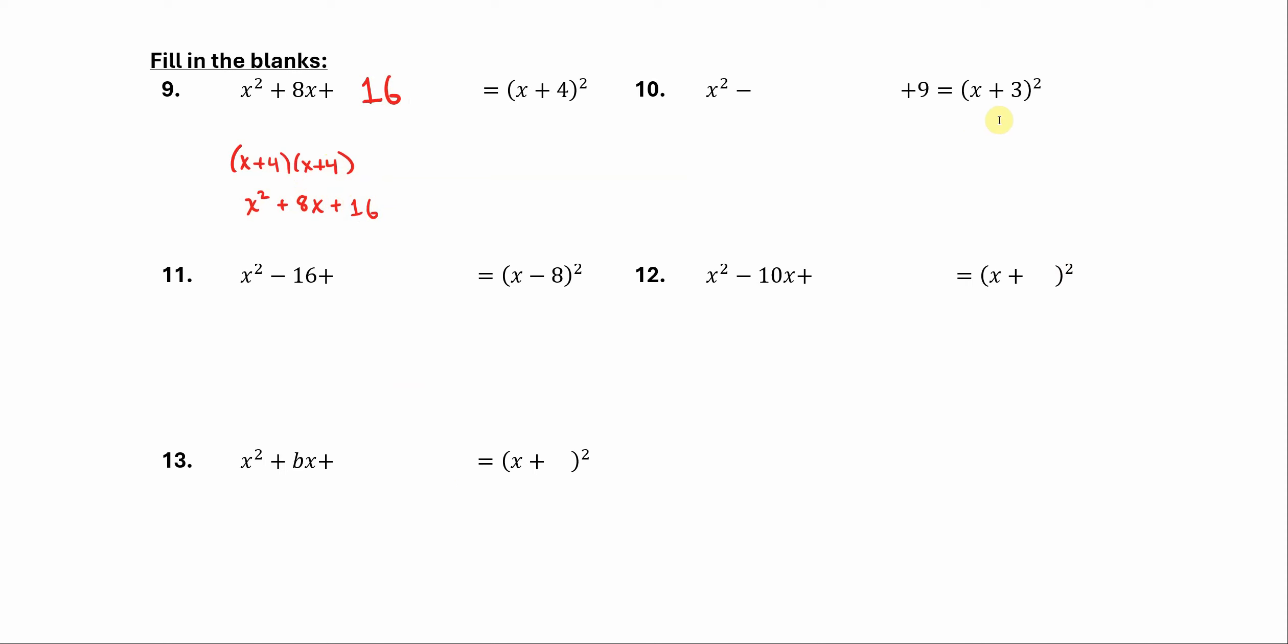All right, how about here? If we had x plus 3 quantity squared, well, if we had this problem we can just distribute. It would be x plus 3 times itself, and that would multiply to get x squared plus 3x plus 3x, so that's 6x plus 9. Okay, so what would go in the blank here? Well, I have a minus sign here, so we'll have to change that to a plus.